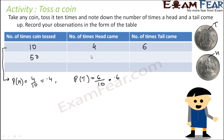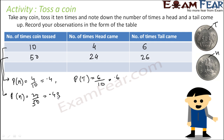If you perform the activity 50 times, it may happen that 24 times you get head and 26 times you get tail. In this case, probability of head comes out to be 24 by 50, that is 0.48, and probability of tail comes out to be 26 by 50, that is 0.52. You see, now the number is nearing 0.5.